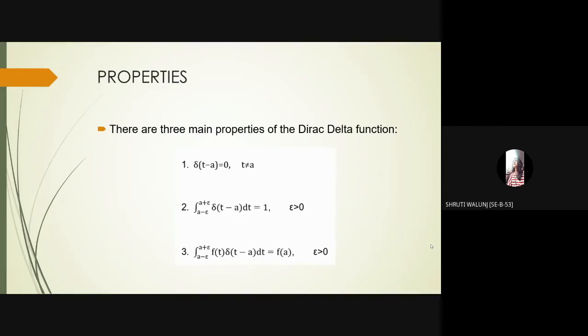At t equal to a, the Dirac delta function is sometimes thought of as having an infinite value. The integrals in the second and third property are actually true for any interval containing t equal to a, provided it is not one of the endpoints. The limits given here are needed to prove the properties.